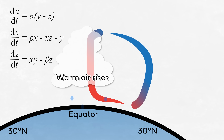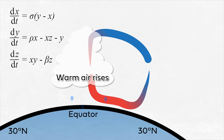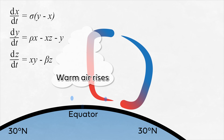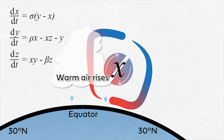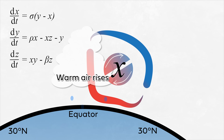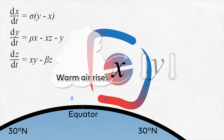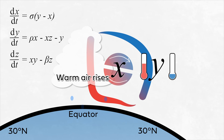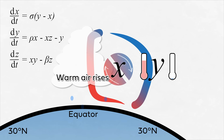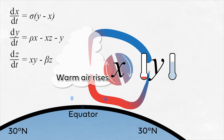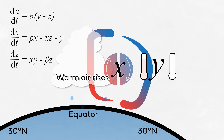The variables of these equations represent physical quantities. X represents how intense convection is in the atmosphere, and Y represents the temperature difference between the rising and falling parts of a convection cell.